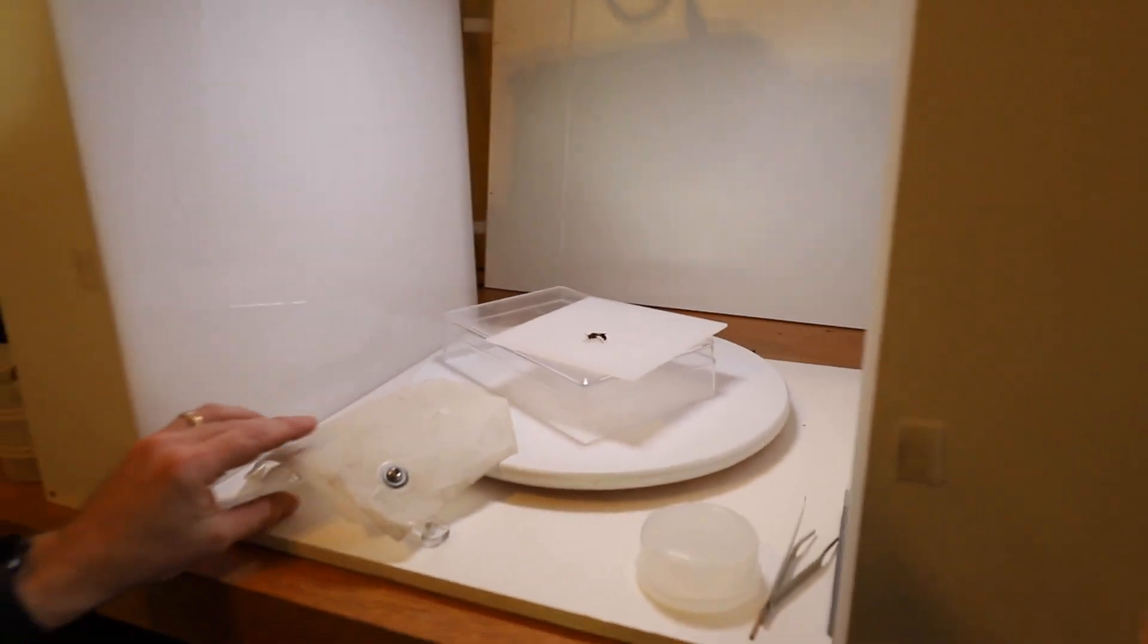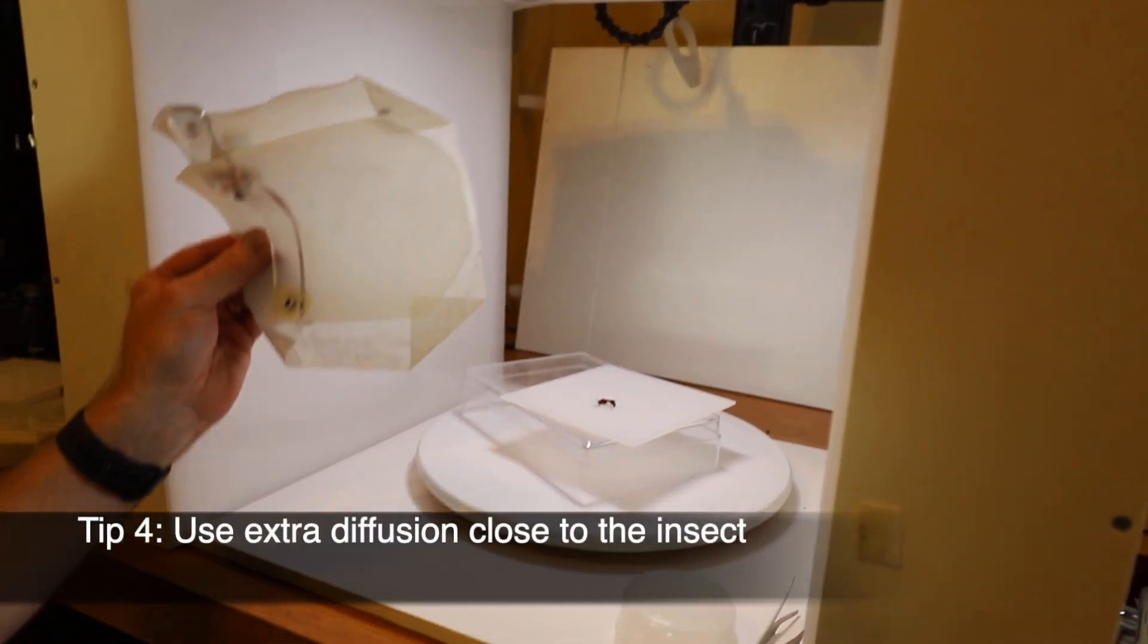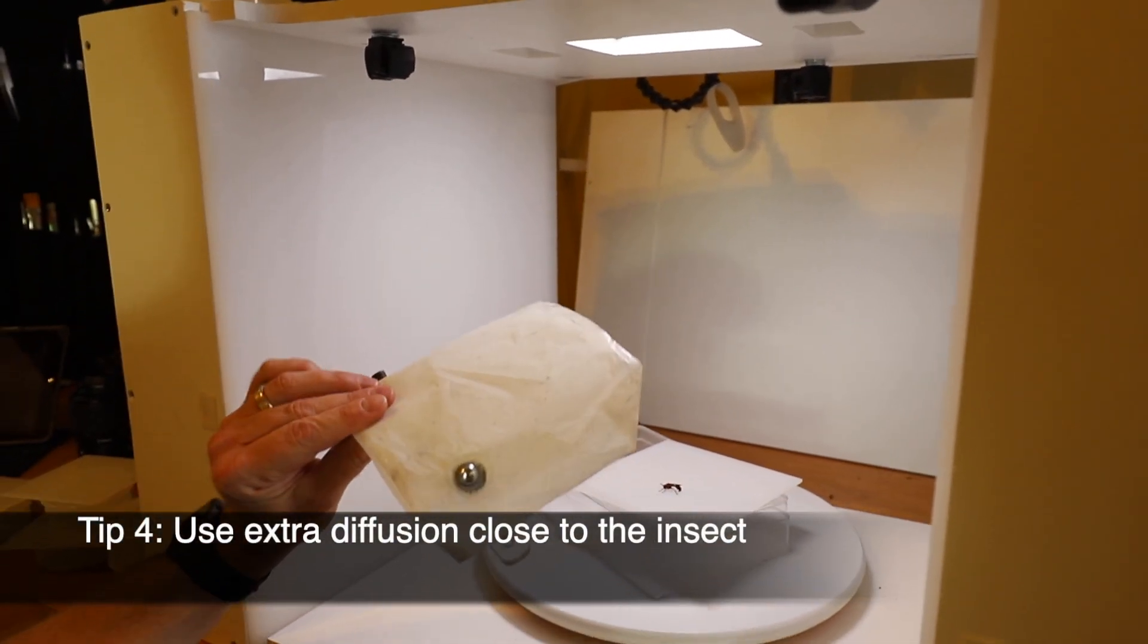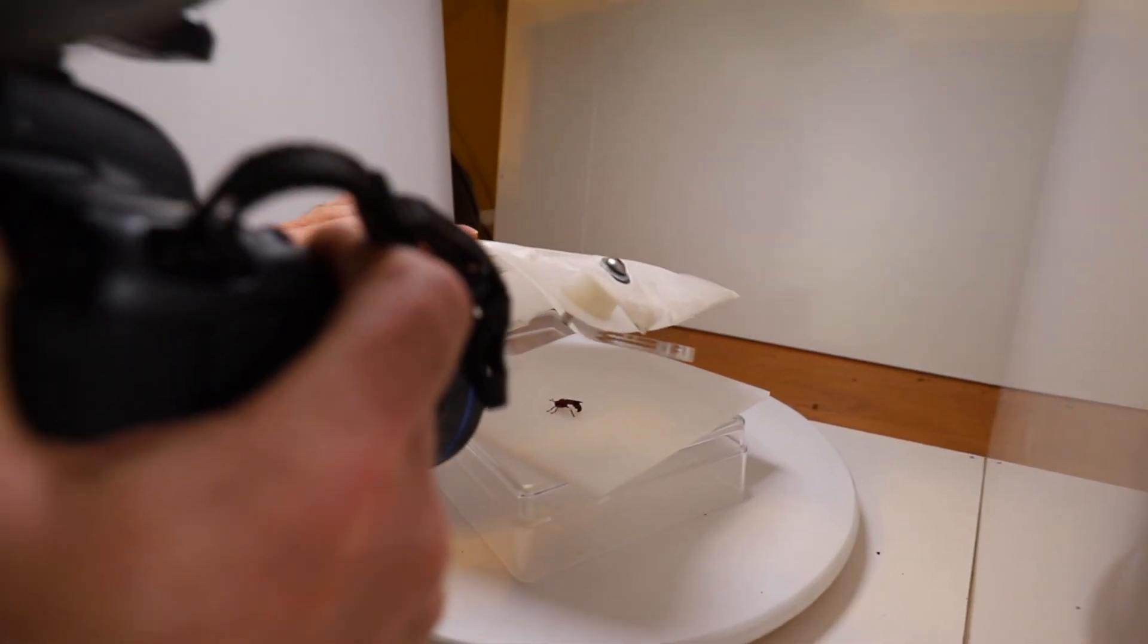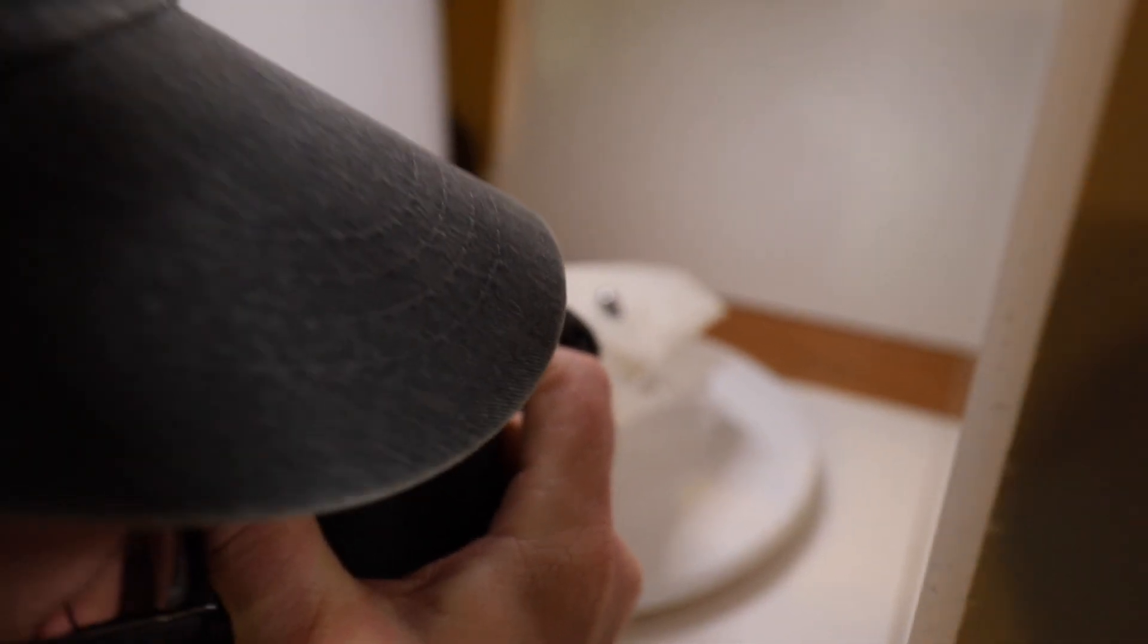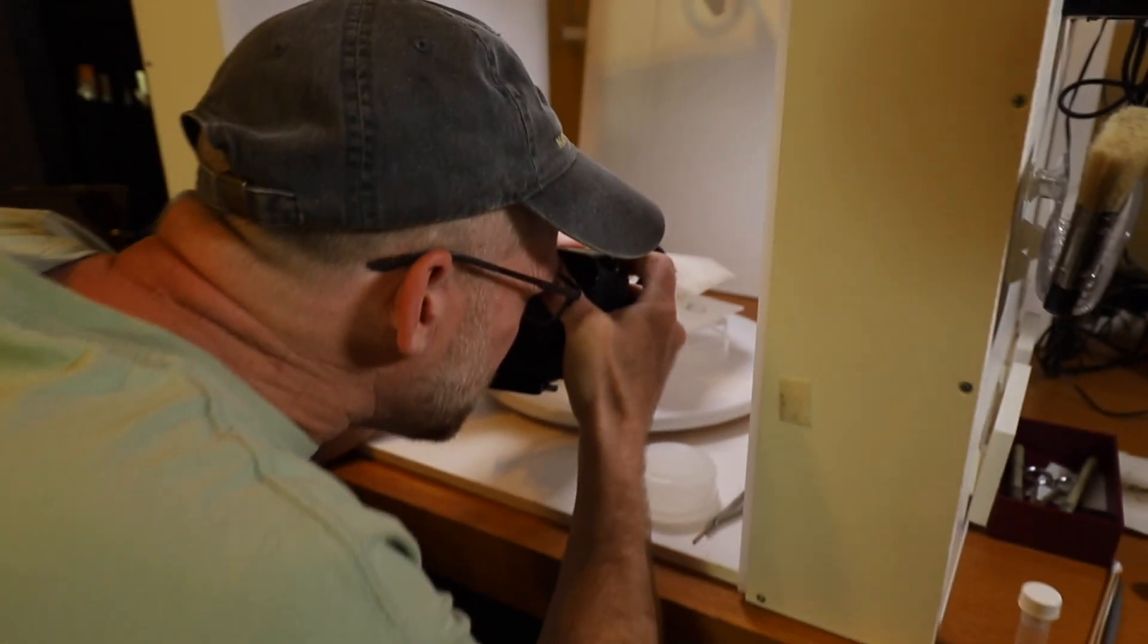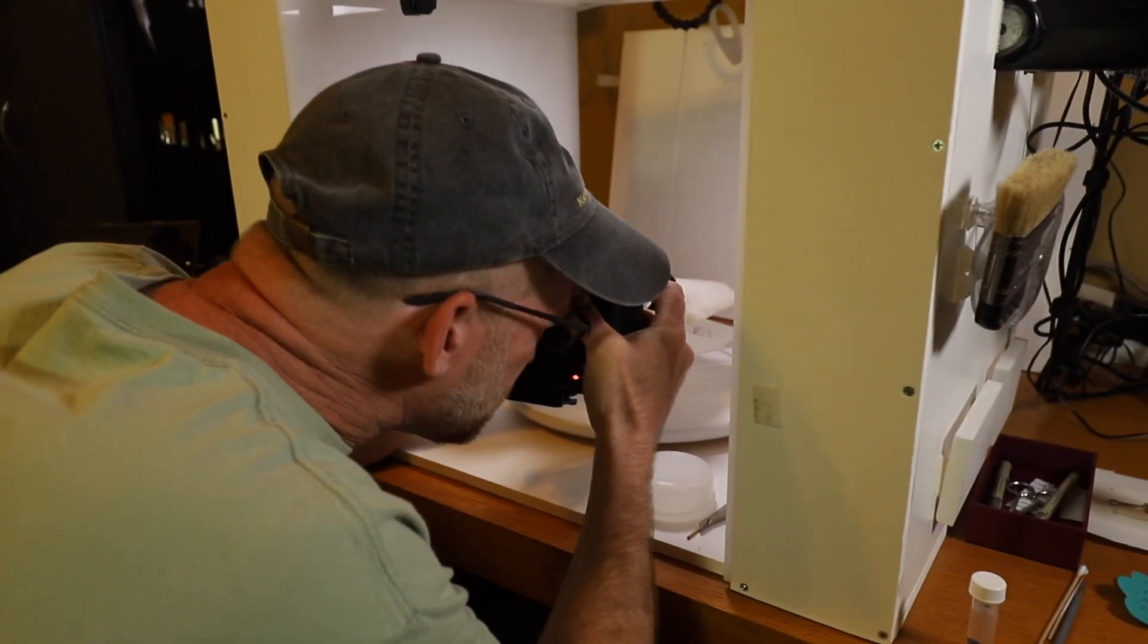When I have something super cooperative like this, I'll just use this typical diffuser that I have on my camera. I've just got it detached and I'll just hold it over like this and get in there and just fire away because the insect, the fly, is being super cooperative.